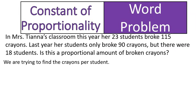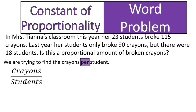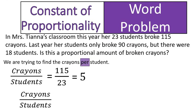So we are going to discover the crayons broken per student. And again, I always write this out — it might seem silly to write words over fractions, but it helps me to keep things in order. So this is crayons per student. Because I have crayons on the top and students on the bottom, I have 115 over 23, which gives me 5 — five crayons per student this year. Notice in the question I changed the order, but if you write it out in word form, it'll help you get them in the right order.